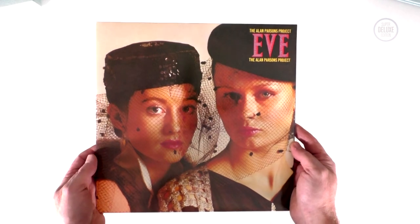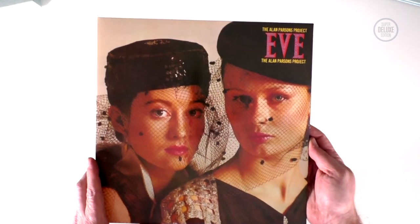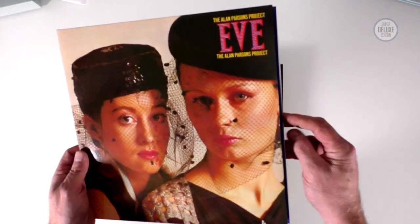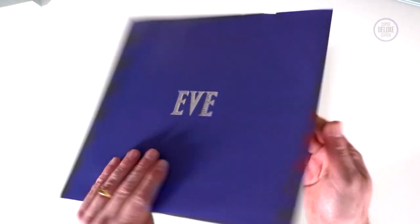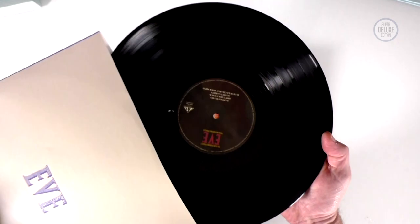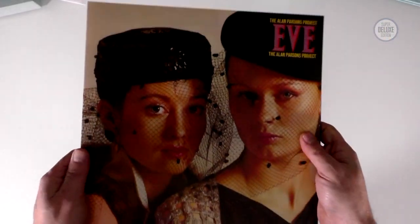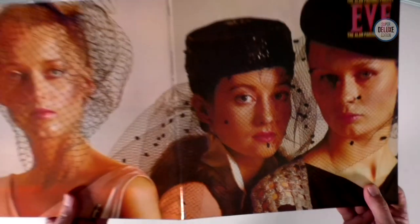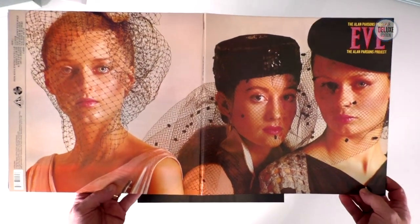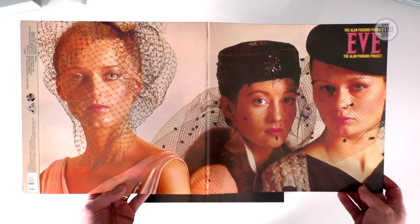So Eve is from 1979. Yet another gatefold presentation. 1979 was the year that they recorded the Sicilian Defence as well. This record has a bit of a glossy feel to it. Again it opens up there. There's the sort of full image. It's one of the good things about gatefold records. You can actually have a wide screen image.